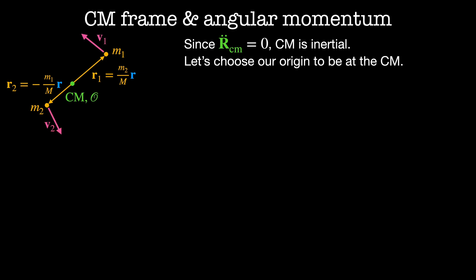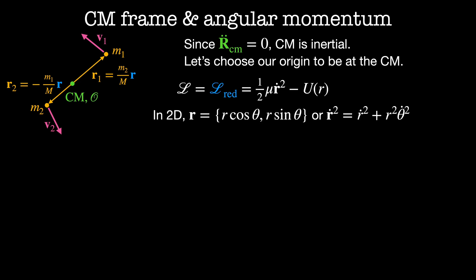In this coordinate system, the position of m1 is given by r1 equal to m2 over the total mass times the relative position r, and mass m2 is located at minus m1 divided by the total mass times the relative position r. These particles have velocities v1 and v2 respectively. The Lagrangian is merely the reduced Lagrangian: one-half mu r-dot squared minus the potential energy as a function of r. In this type of system, symmetry dictates that all the motion must be planar, meaning the plane spanned by r1 and v1 is the same plane spanned by r2 and v2. So all we need is two dimensions to describe the entire system. In two dimensions we write the relative position in polar coordinates r cosine theta and r sine theta, where r-dot squared equals r-dot squared plus r squared theta-dot squared.